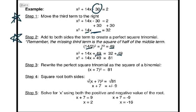Now, x squared plus 14x plus 49 is the square binomial x plus 7 squared. And on the right-hand side, 32 plus 49 equals 81. Now I have a very simple equation that can be solved using the square root property. You square root both sides of the equation, and the square root and the square cancel, leaving you with x plus 7 equals plus or minus 9.